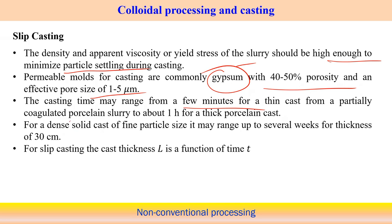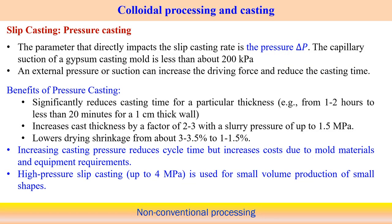Casting time varies from a few minutes for thin castings to about one hour for thick porcelain casts. For dense solid casts with fine particle size, thickness of 30 cm can require several weeks of casting time. This is why the conventional slip casting rate is very slow, and external aids are used to accelerate it — for example pressure casting, which applies external pressure to enhance the casting rate through the porous medium.